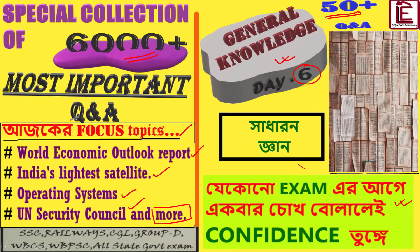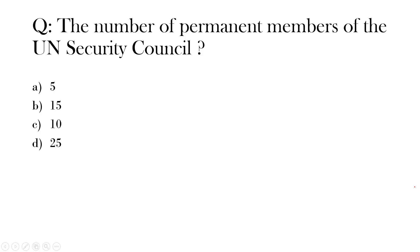The first question is: what is the number of permanent members of the UN Security Council? The correct answer is option A — 5. Five nations are permanent members of the UN Security Council.